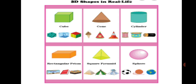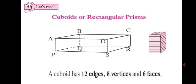You are familiar with shapes such as a cube, cone, cylinder, rectangular prism, square pyramid and a sphere. So let's learn about rectangular prisms, which are also called cuboids.